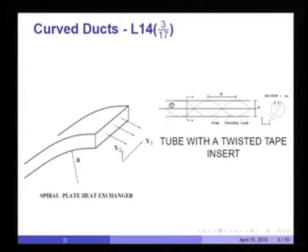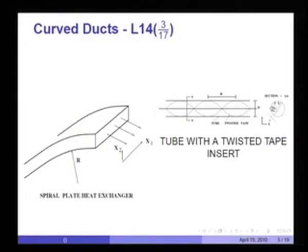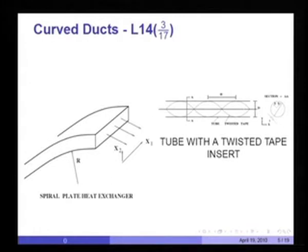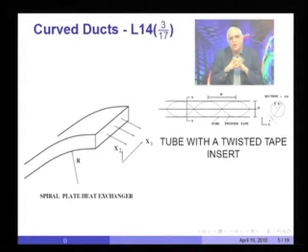Another example is a plain tube with a circular cross section in which a metal strip of width equal to the diameter of the tube is twisted about the axis of the tube. The tape divides the circular cross section into two semicircular ones, and each semicircular cross section twists along the axis of the tube as one goes down in the flow direction, forming a very complex curved duct with non-circular geometry.